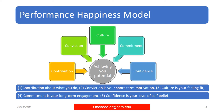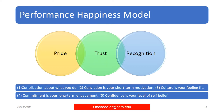In my next slide, the most important layer of my Performance Happiness Model is called pride, trust, and recognition. These three segments are linked to each other and form the most external part of my model. So how my contributions, conviction, culture, commitment, and confidence are linked to pride, trust, and recognition to deliver what I have planned — that is the most critical part of my happiness model.